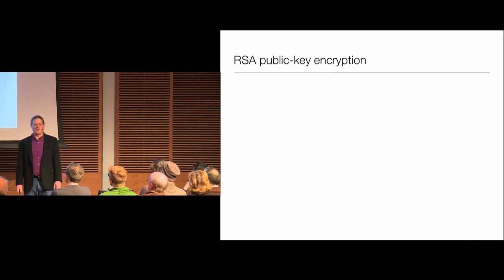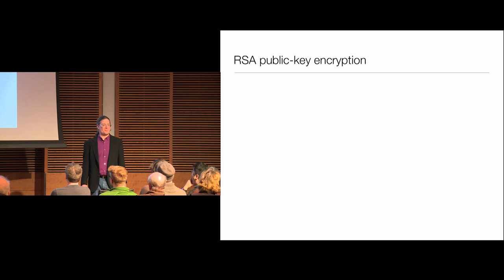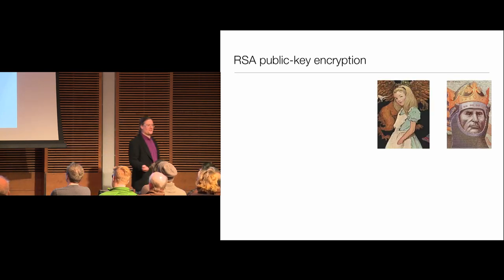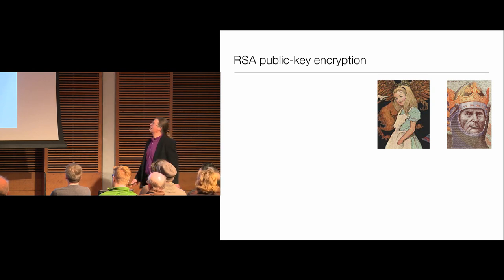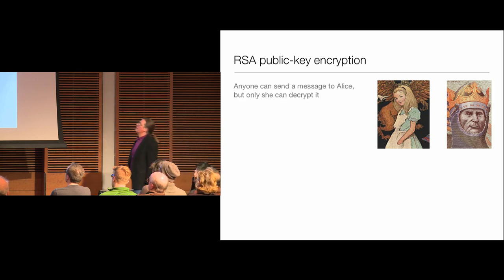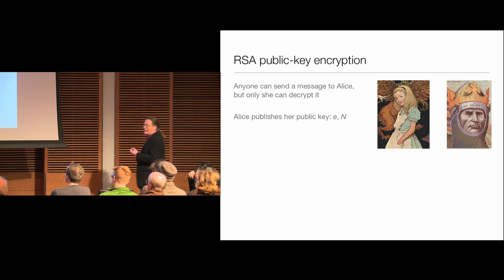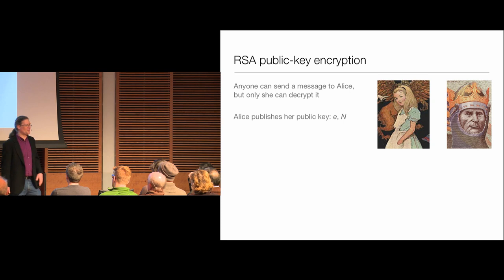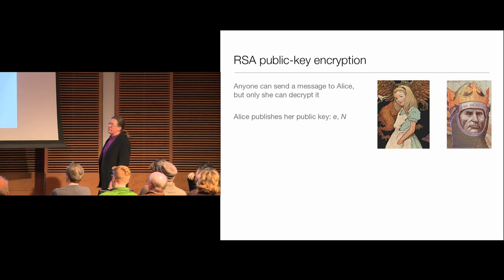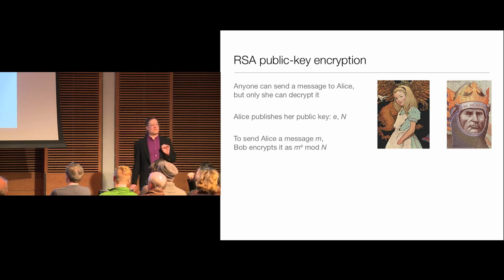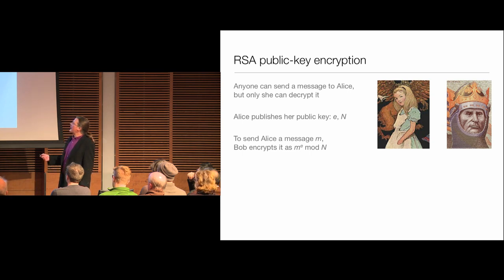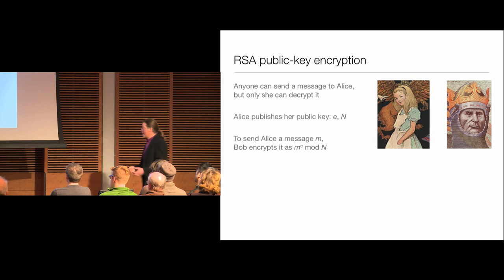Here is the cryptosystem on which most electronic commerce — now I should just say most commerce — is based. Bob wants to send a message to Alice. Alice wants to make it possible so that anyone in the world can send her a message, but only she can read it. She's going to have a public key and a private key. Her public key — two numbers E and N — is what she puts in her email signature or on her webpage. If Bob wants to send her a message M, which we think of as a number, he raises it to the power E, multiplies it by itself E times, takes the result mod N, and sends that number to Alice.